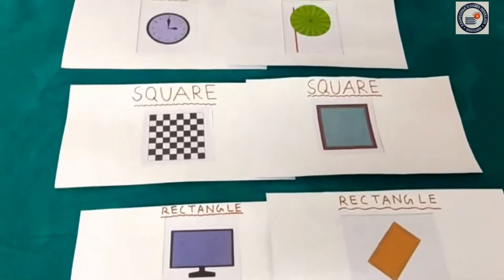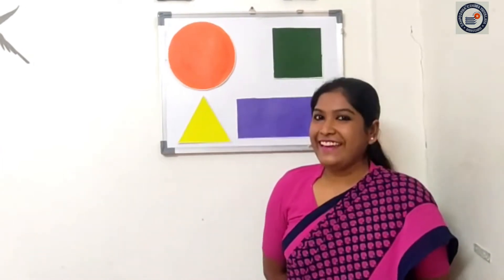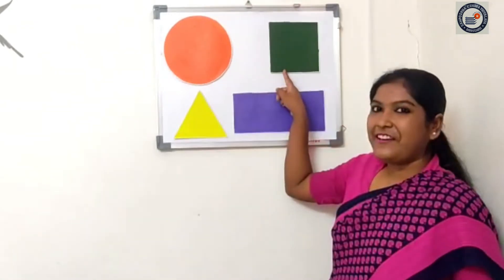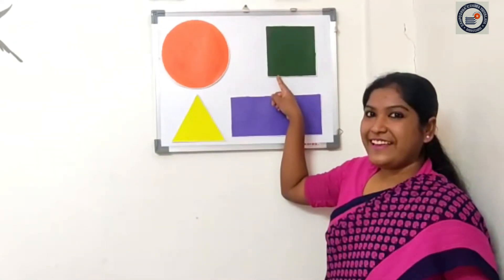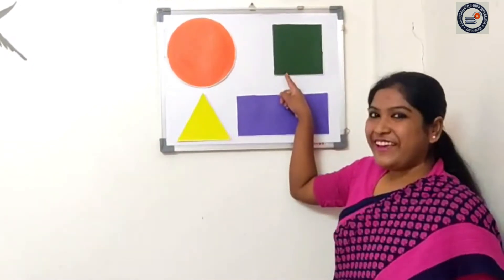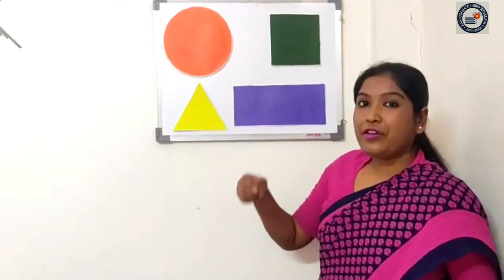Now again I will count from one to ten. You have to identify the other three objects. One, two, three, four, five, six, seven, eight, nine, ten. Okay students, now tell me what is this shape? Yes, this is a square. Very good. Look into the table.